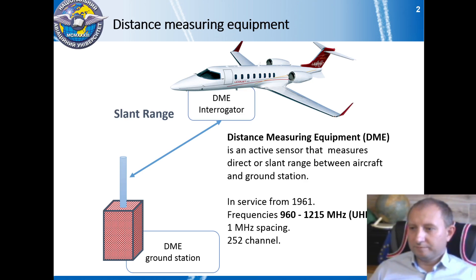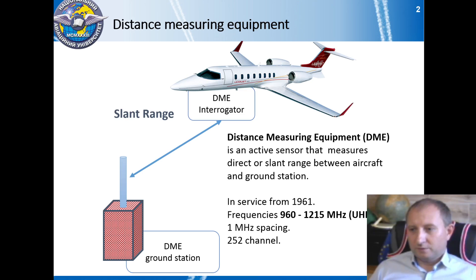Distance measuring equipment, or DME, is an active sensor that measures direct or slant range between an aircraft and a ground station. The DME system consists of numerous DME ground stations called transponders, and onboard DME interrogators. DME has been in service from 1961.